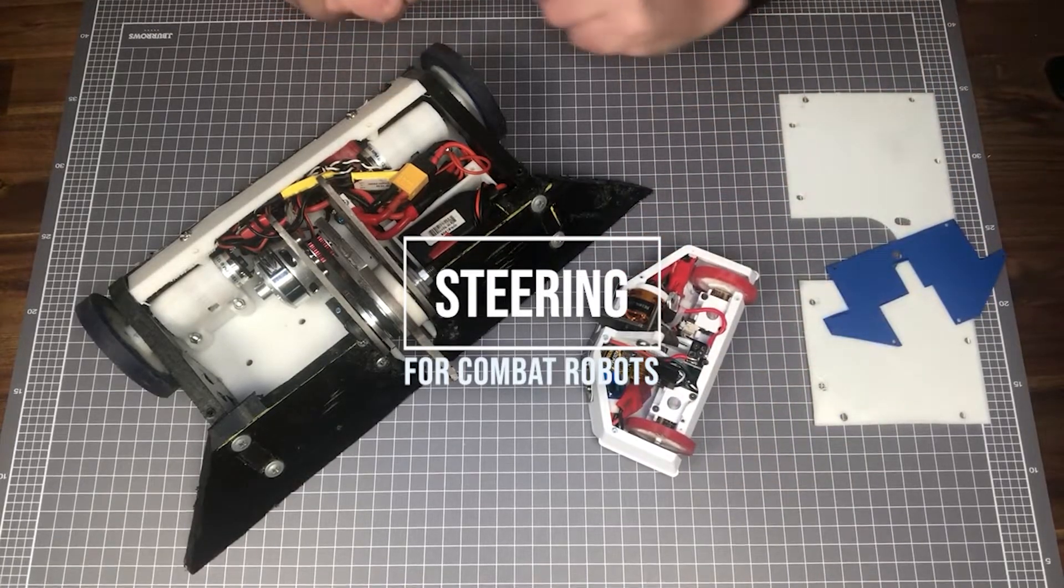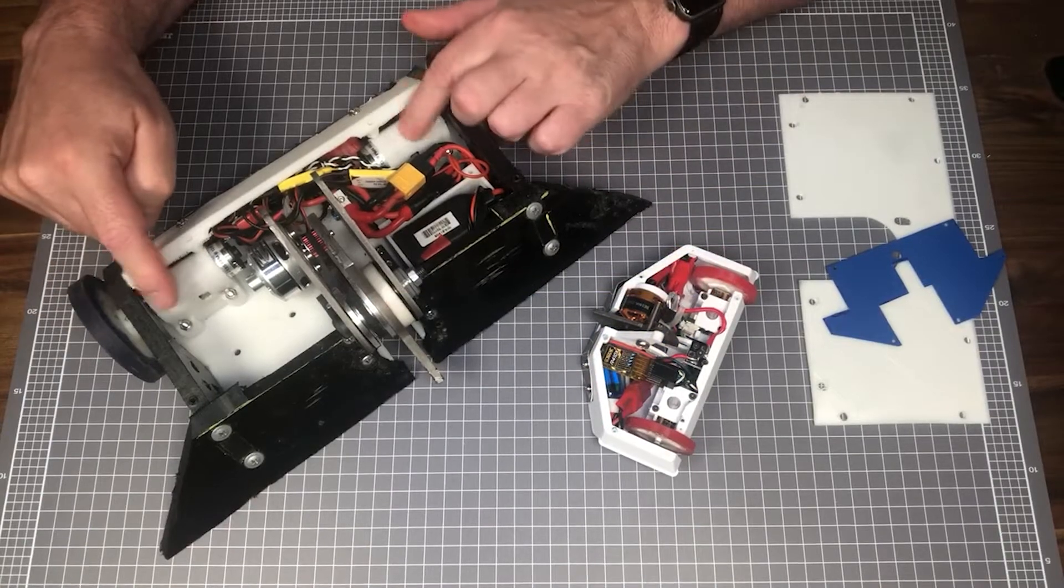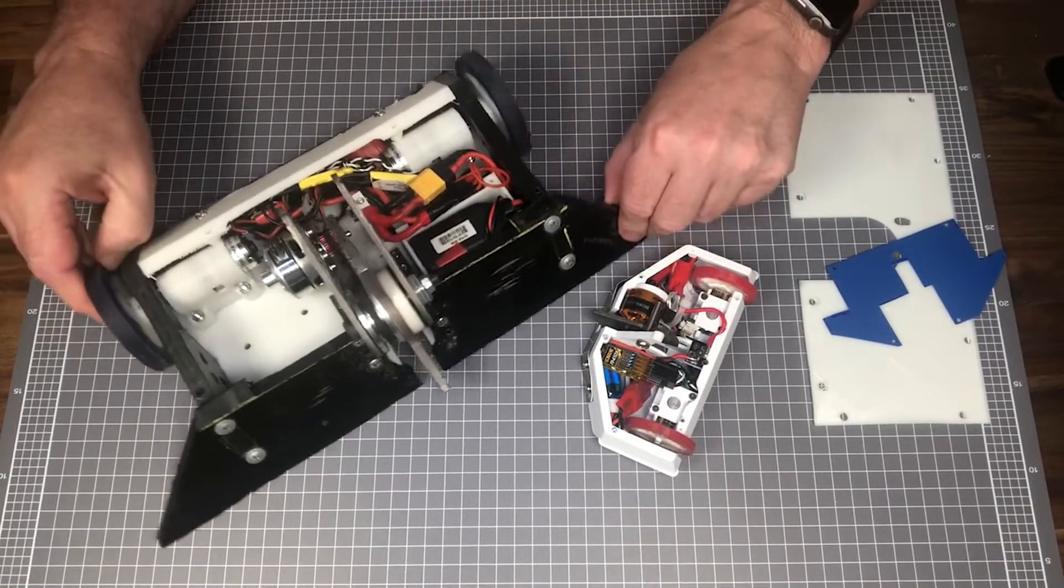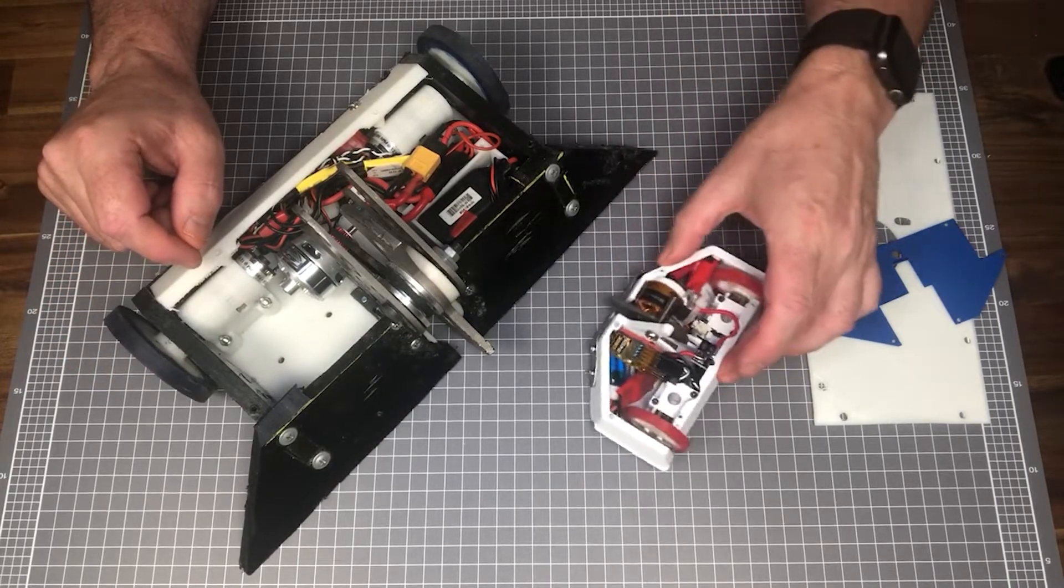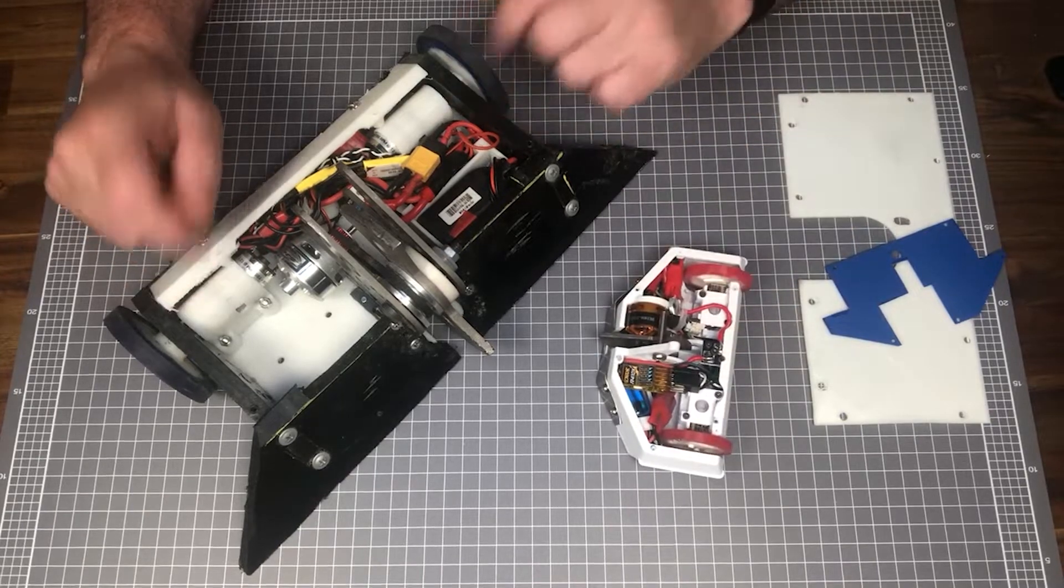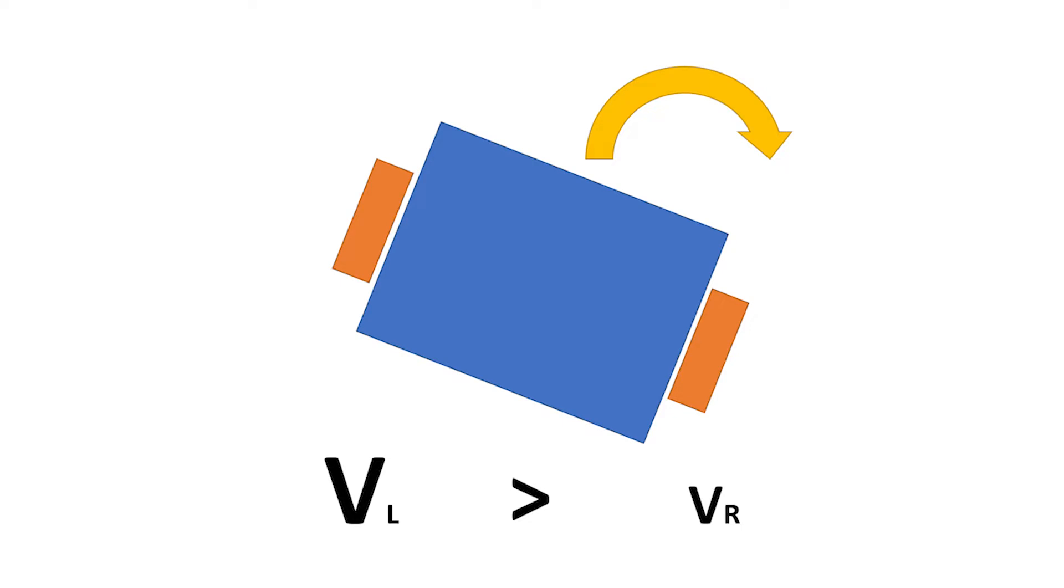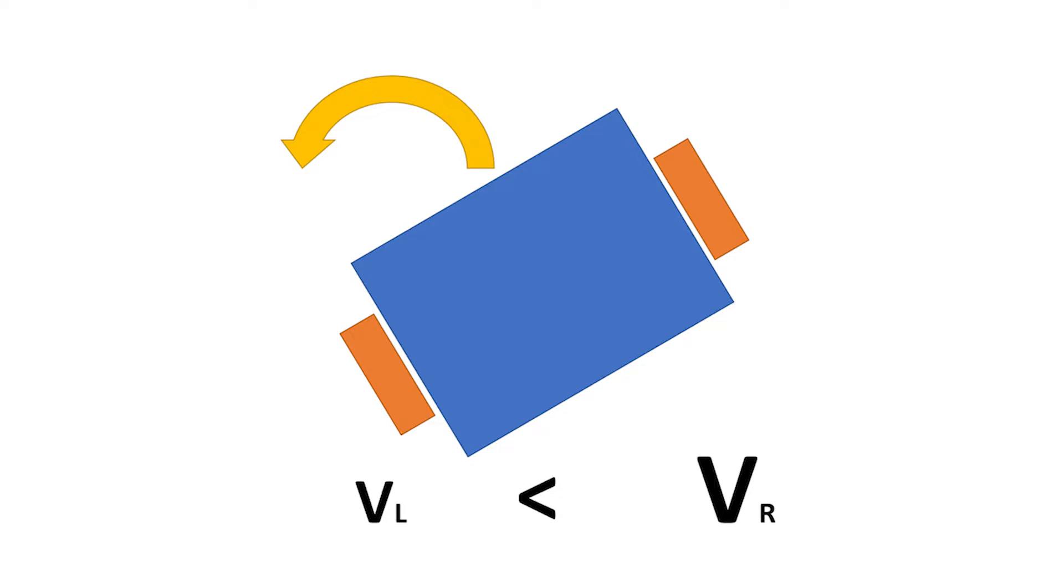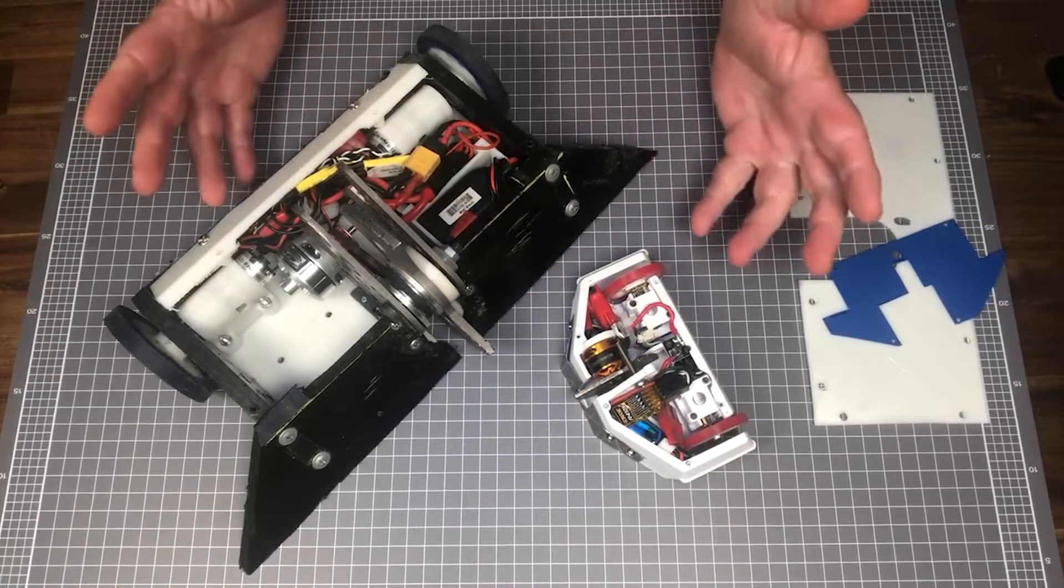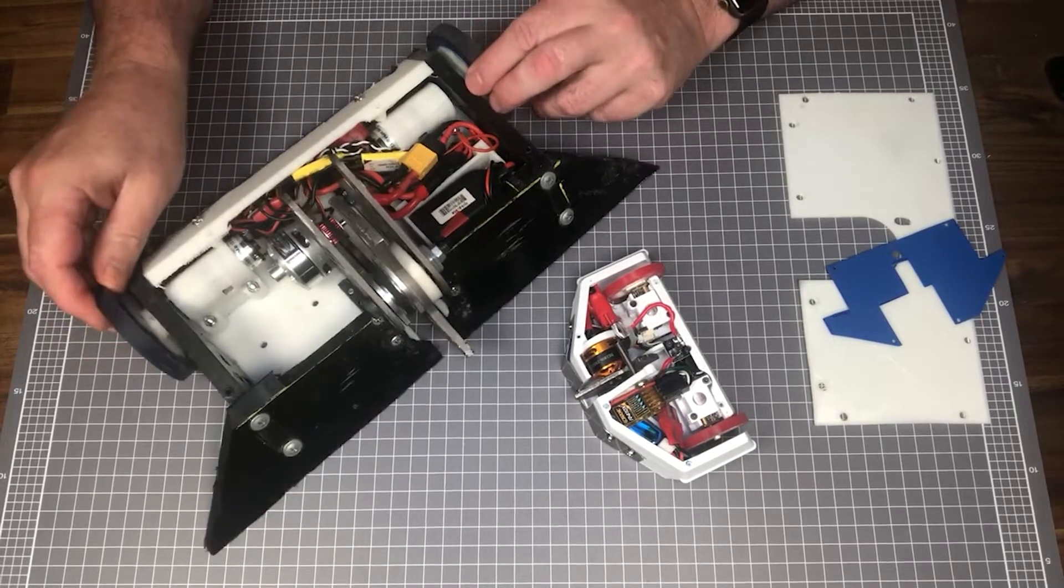Combat robots don't normally use the type of steering you would find in a car, such as rack and pinion, but instead use motors on each side of the robot to steer in what is called tank steering. Tank steering is where the wheel or wheels on one side of the bot are turned faster than the wheels on the other side, and this turns the bot. If the wheels are faster on the left side, then the robot turns to the right, and if the wheels are faster on the right side, then the robot will turn to the left, just like a military tank. So when designing a combat robot, both speed and steering control need to be considered.